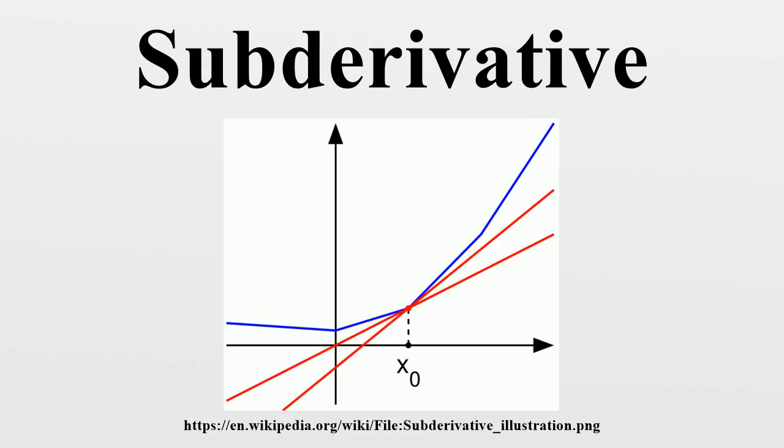Consider the function F(x)=|x|, which is convex. Then, the sub-differential at the origin is the interval [-1,1]. The sub-differential at any point x₀<0 is the singleton set {-1}, while the sub-differential at any point x₀>0 is the singleton set {1}.